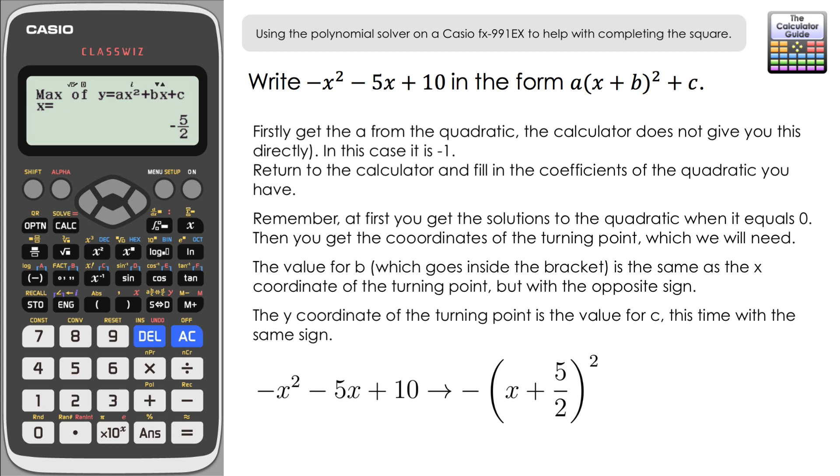So it's minus and then brackets (x + 5/2)² and then our c is going to be, if you just press equals, get the y coordinate. Our c is going to be 65/4, and I would suggest that you do leave it in fraction form rather than pressing sd and writing it as a decimal. Leave these in fraction form. It looks a lot neater. It's the best way to present your answer there.